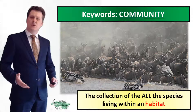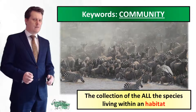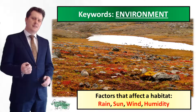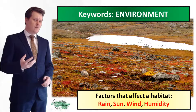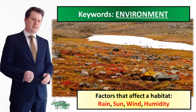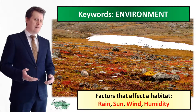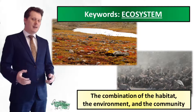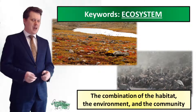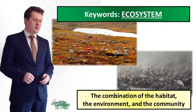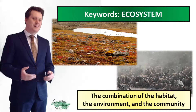Collectively all the animals of all the species living within a habitat make up a community. The factors that affect that habitat — things like rainfall, the amount of sunlight, the amount of wind and the amount of humidity — are referred to as the environment. And when you combine that habitat and its environment and the community made up of those populations that live there, you have an ecosystem.